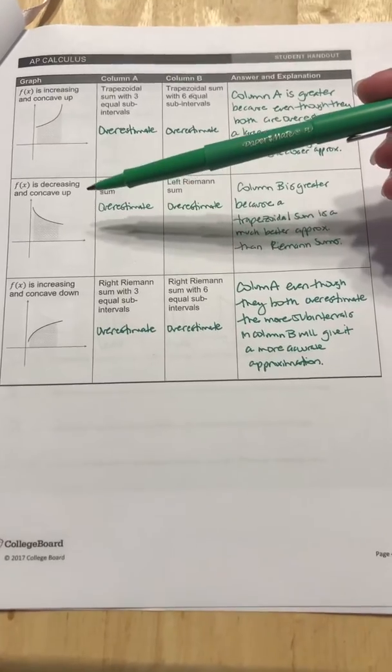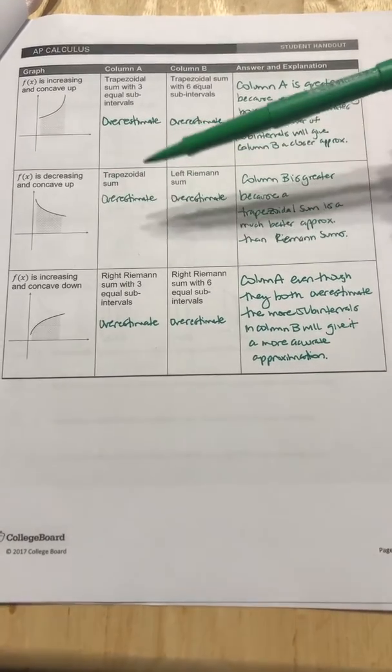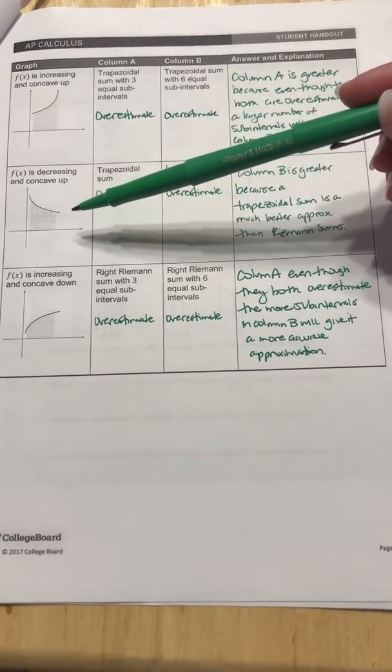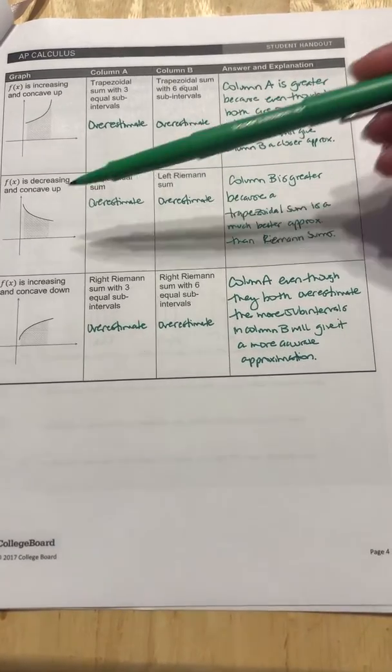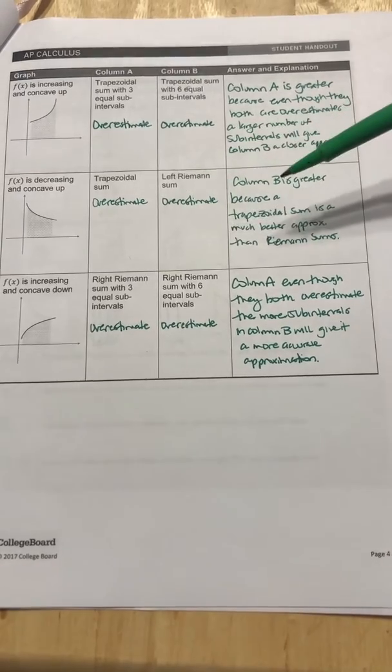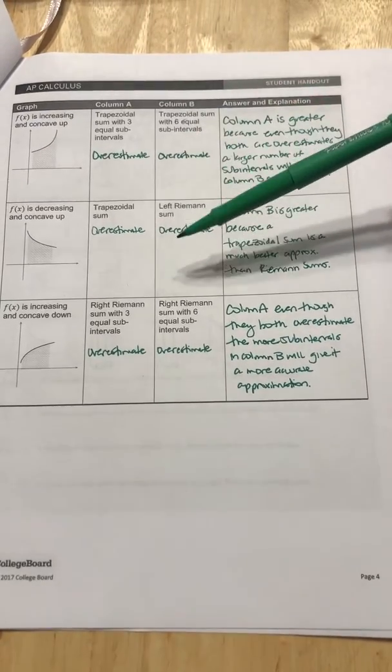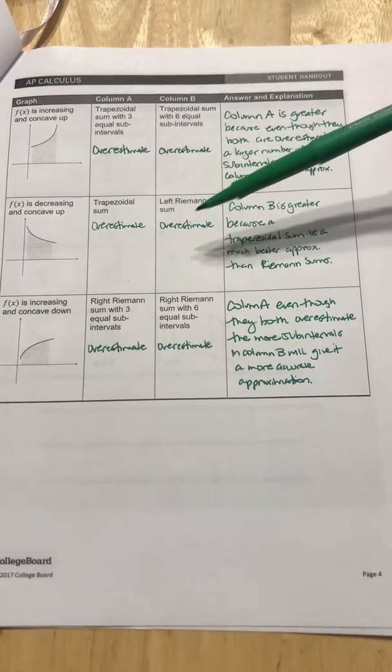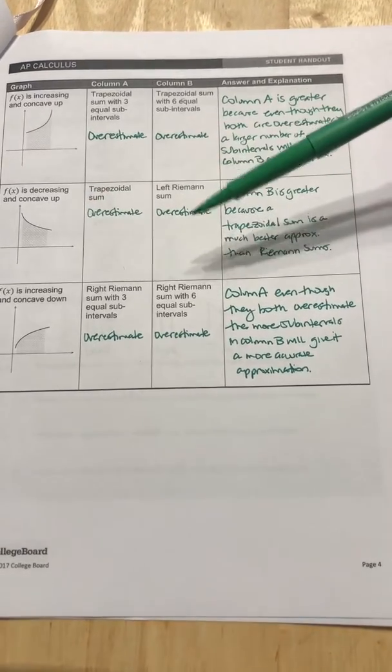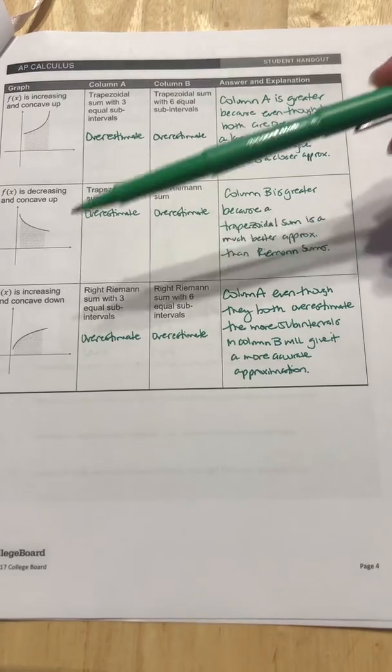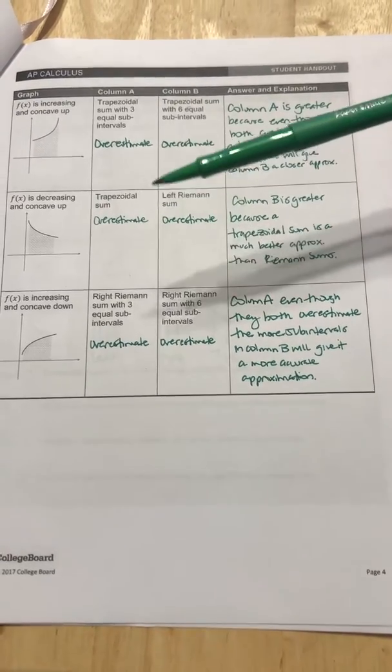So then this one, f of x is decreasing and concave up. So the trapezoidal sum for concave up would be overestimating and a left Riemann sum is actually overestimating as well, but column B is going to be the bigger estimate because trapezoidal sums are actually better approximations to the actual area. So the left Riemann sum, the rectangles will be overestimating more than the trapezoids.